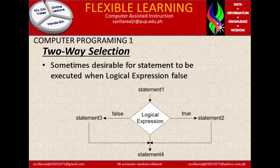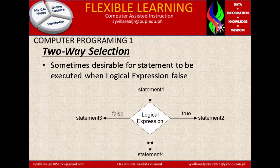Let's proceed with the two-way selection. Sometimes it's desirable for a statement to be executed when logical expression is considered to be false. If we have statement 1, it goes directly to the logical expression, which is the decision. On the right we have true, and on the left we have false. Then it will go down to the end of the program. The same process in the false statement 3. It will go to the end of the program.